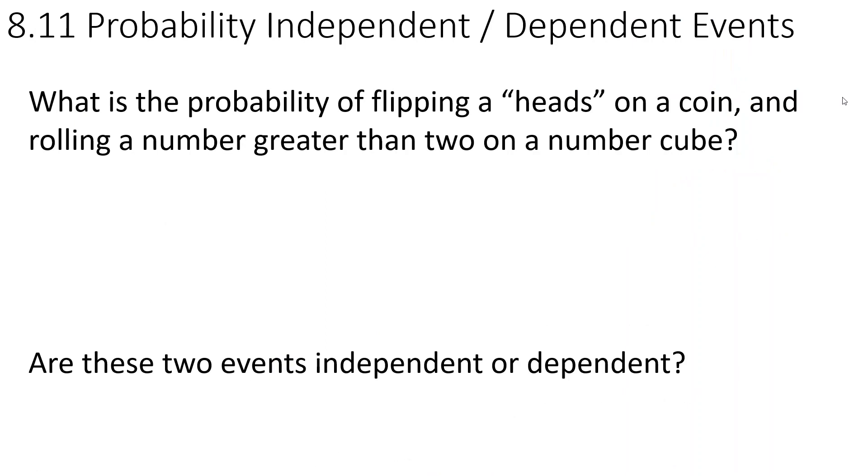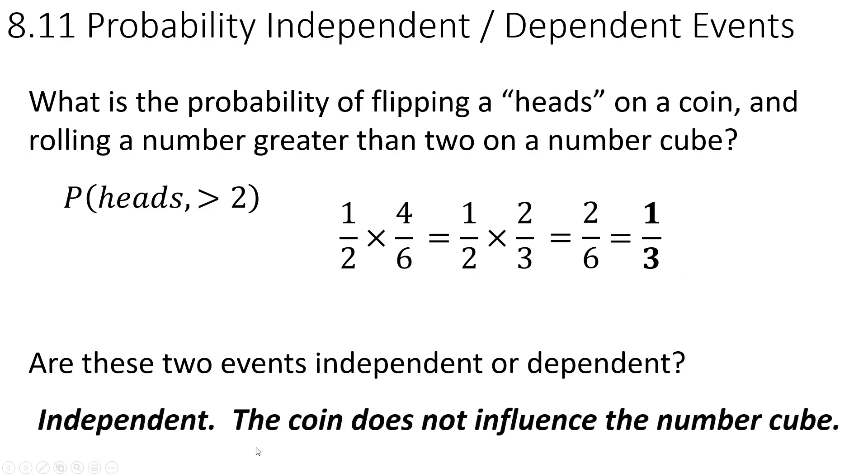So what is the probability of flipping a heads on a coin and rolling a number greater than 2 on a number cube? And then are these events independent or dependent? So we are going to figure out the probability of flipping heads on a coin. That's 1 out of 2. There are 4 numbers that are greater than 2 on a number cube. You've got 3, 4, 5, 6. So that's 4 numbers. You could just work this out. You could plug it in Desmos. You need to make sure you understand your fraction operation rules. It's 1 third. So you have a 1 in 3 chance of this happening. Are these two events independent or dependent? They're independent. Flipping the coin has no effect on rolling the number cube.